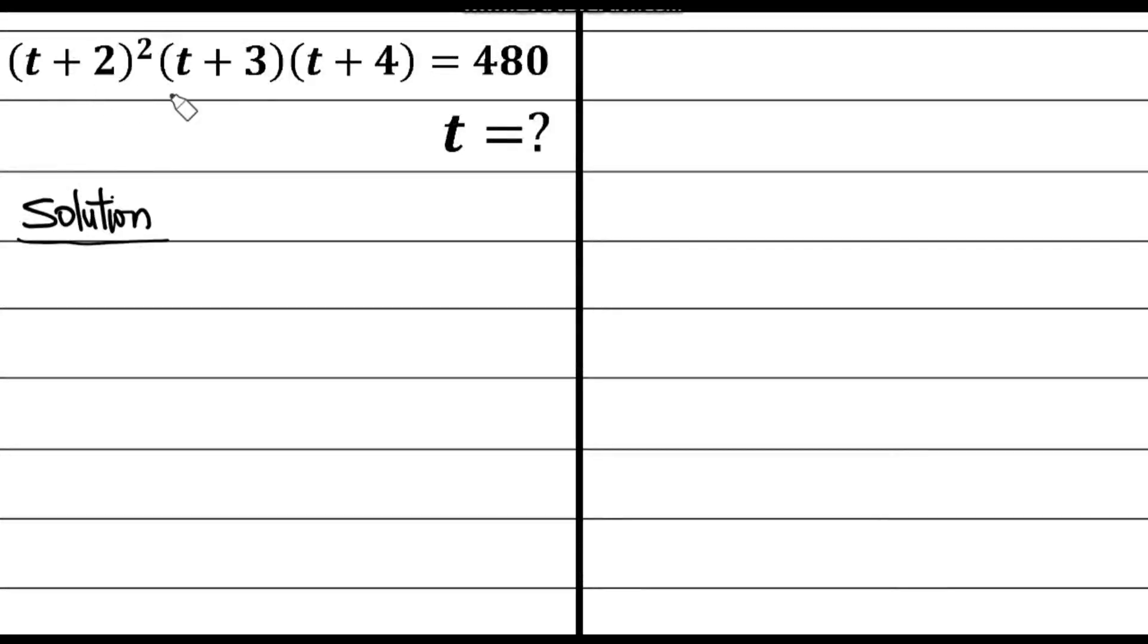Hey everyone, solving this question: t plus 2 raised to the power of 2, t plus 3, then into t plus 4 equals to 480, and the question is to find t.